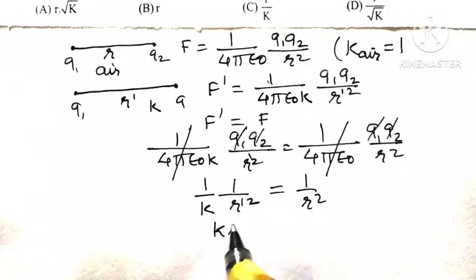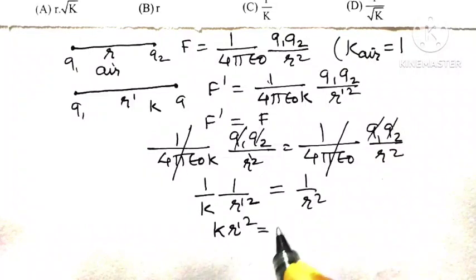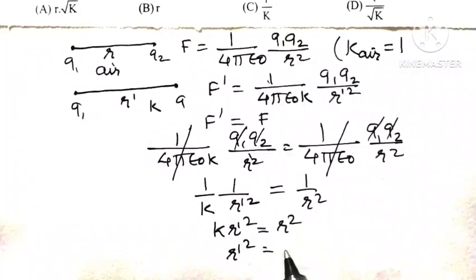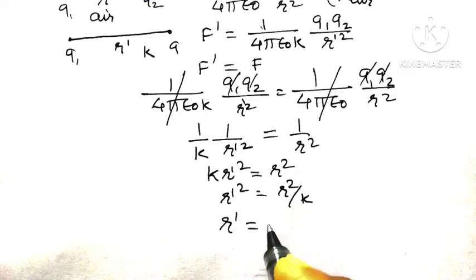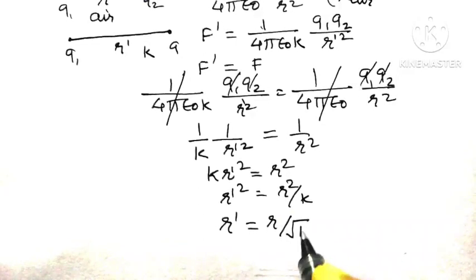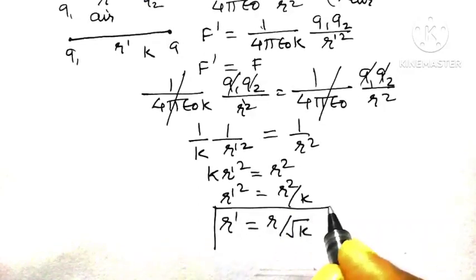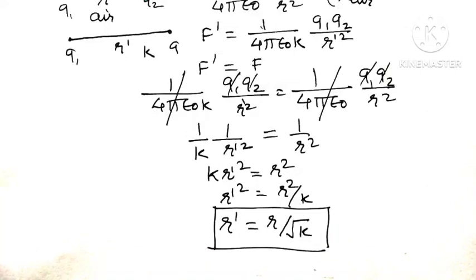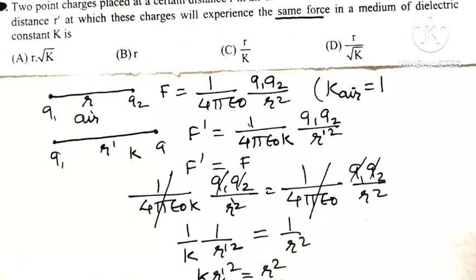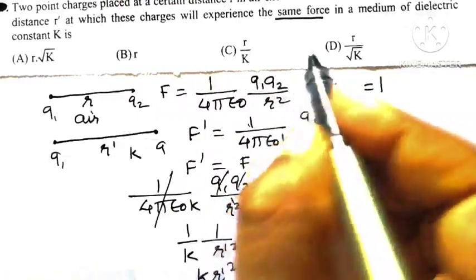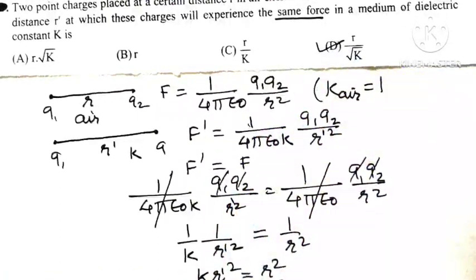Therefore, K × R'² = R², so R'² = R²/K. Taking the square root on both sides gives R' = R/√K. Out of the four options, Option D, which is R divided by root K, is the correct answer.